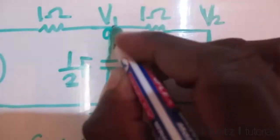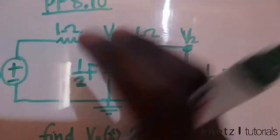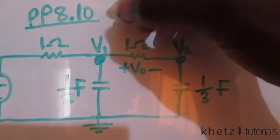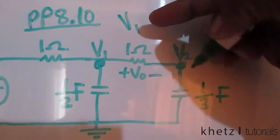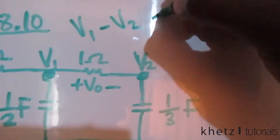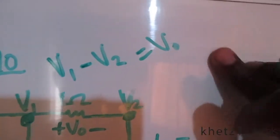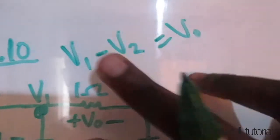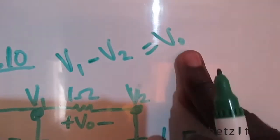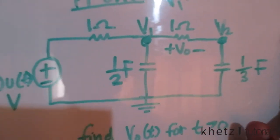vo is indicated in between v1 and v2. A quick relationship we can establish is that moving from that point to that point gives us vo, so v1 subtract v2 equals vo. We're going to find the individual values of v1 and v2, then subtract one from the other to find vo(t).